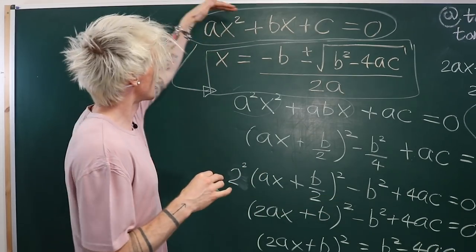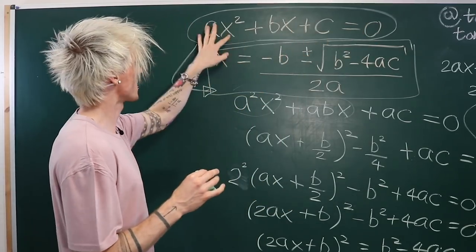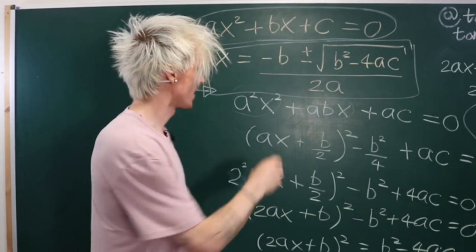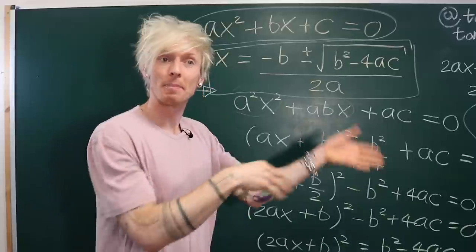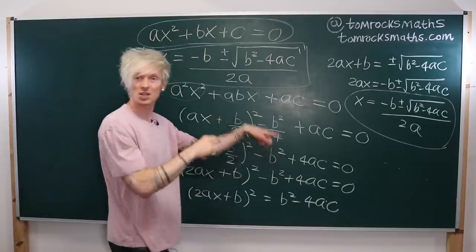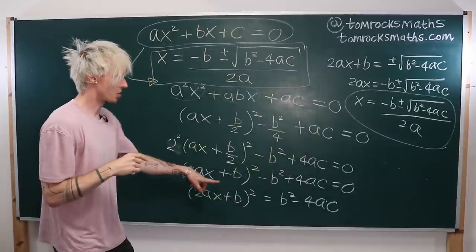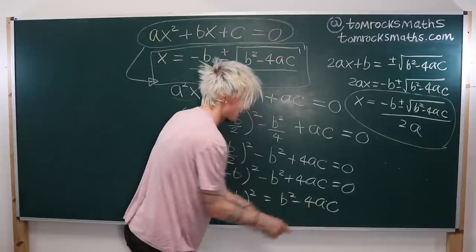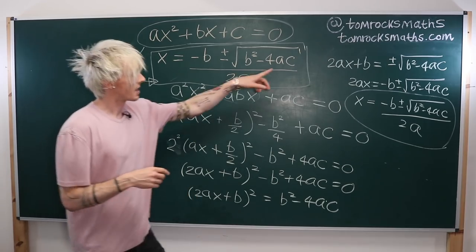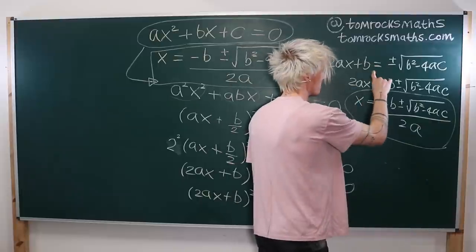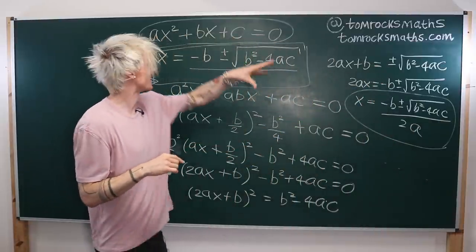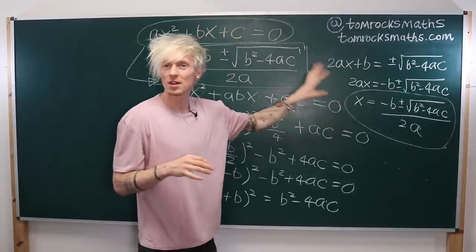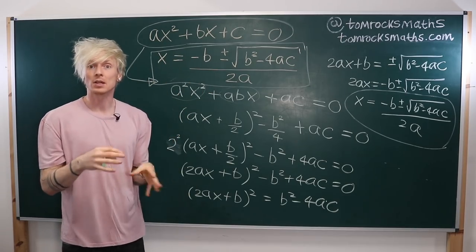Just to recap: we start with ax² + bx + c = 0, multiply through by a, complete the square to get (ax + b/2)², subtract b²/4 + ac, multiply by 4 so the 2 goes inside the bracket, put b² − 4ac on the right-hand side, square root remembering ±, subtract b, divide by 2a. We've shown that for any general quadratic with coefficients a, b, c, the general solution is the quadratic formula, derived using completing the square.